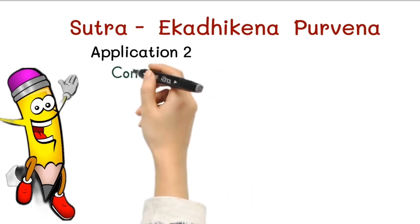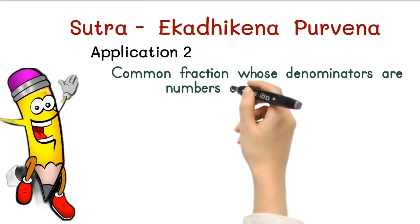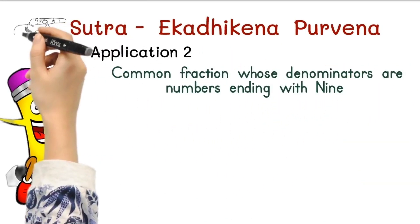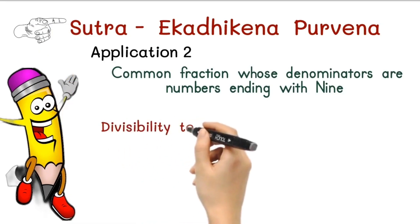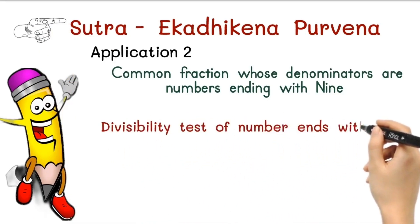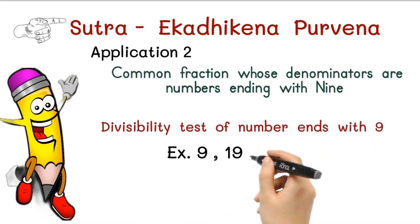Which is common fractions whose denominators are numbers ending with 9. This sutra works as divisibility test of numbers ending with 9, just like 9, 19, 29, 39 and so on.